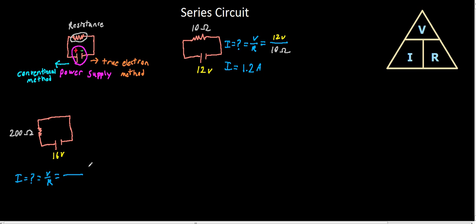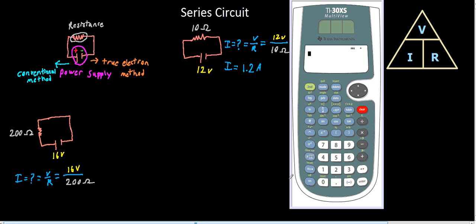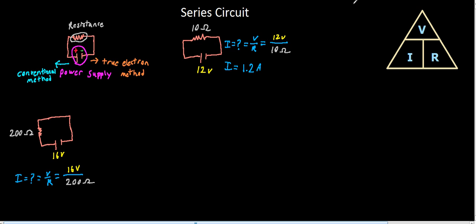We know the voltage is 16 volts. And we know the resistance is 200 ohms. And this is a little bit harder of a math problem. So we're going to pull out our handy calculator. And we're going to type in 16 divided by 200. And what do we get? We get 0.08 for our current. So we get equals 0.08 amps.